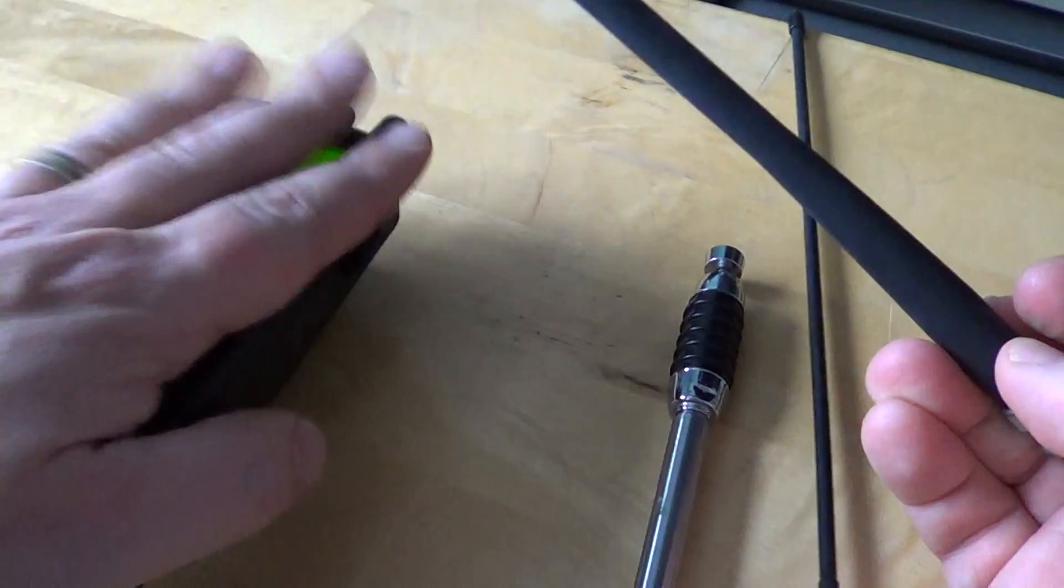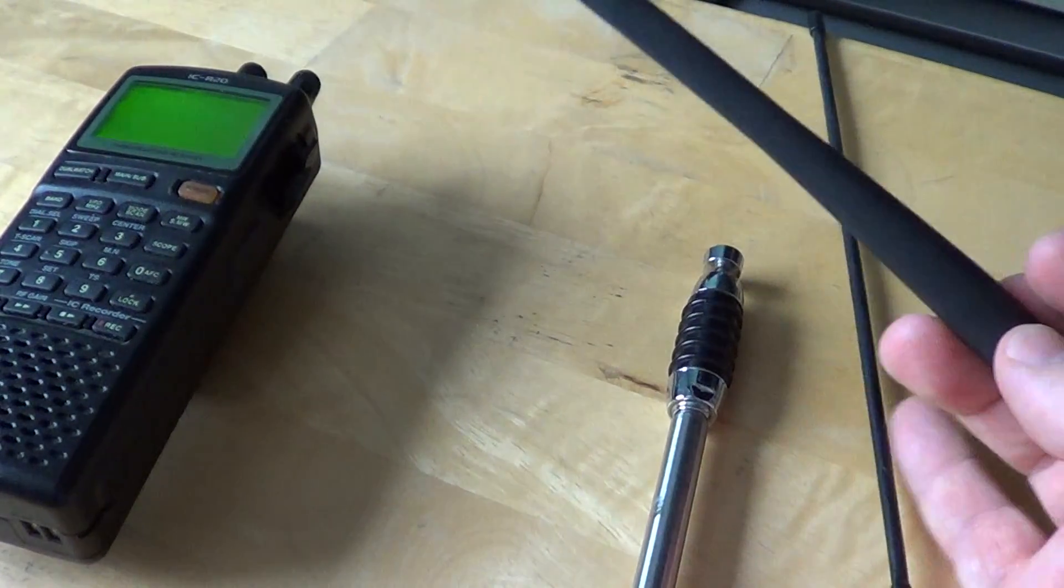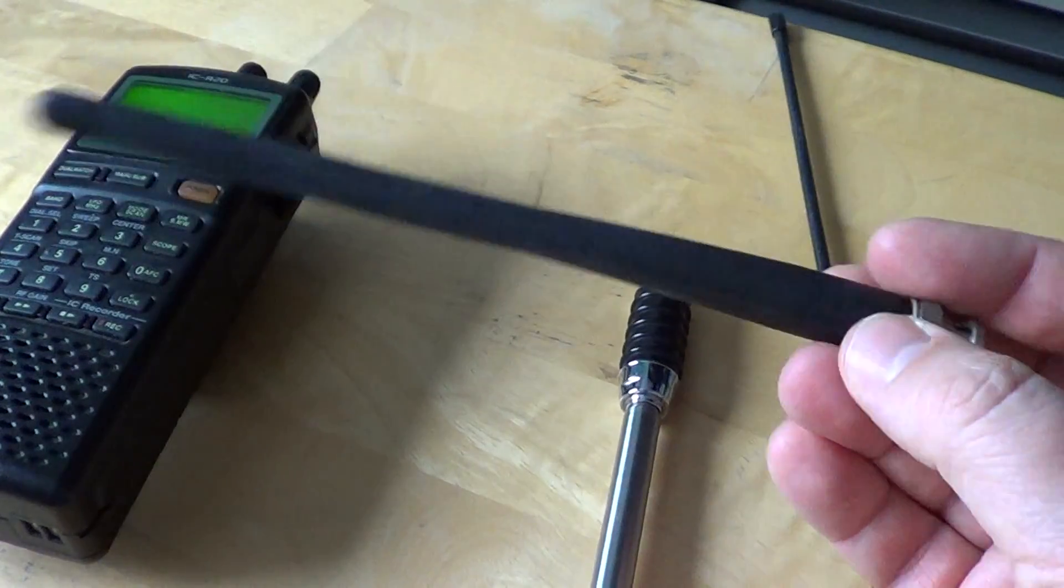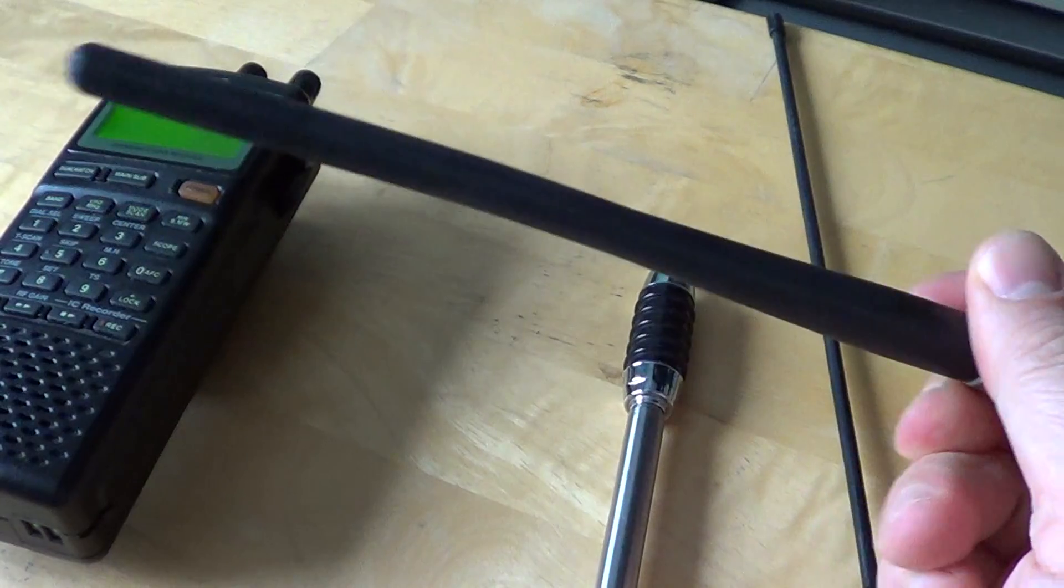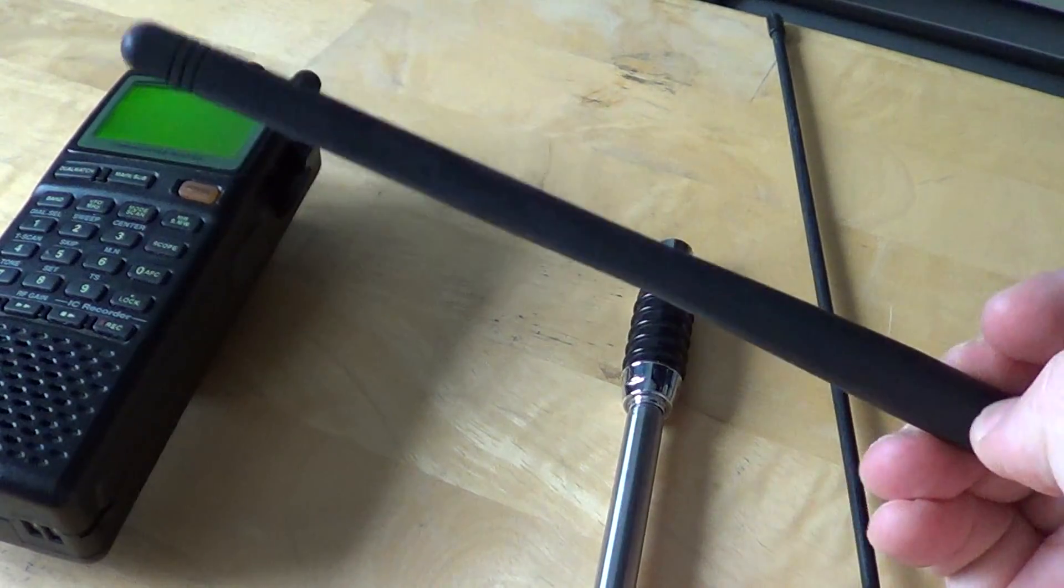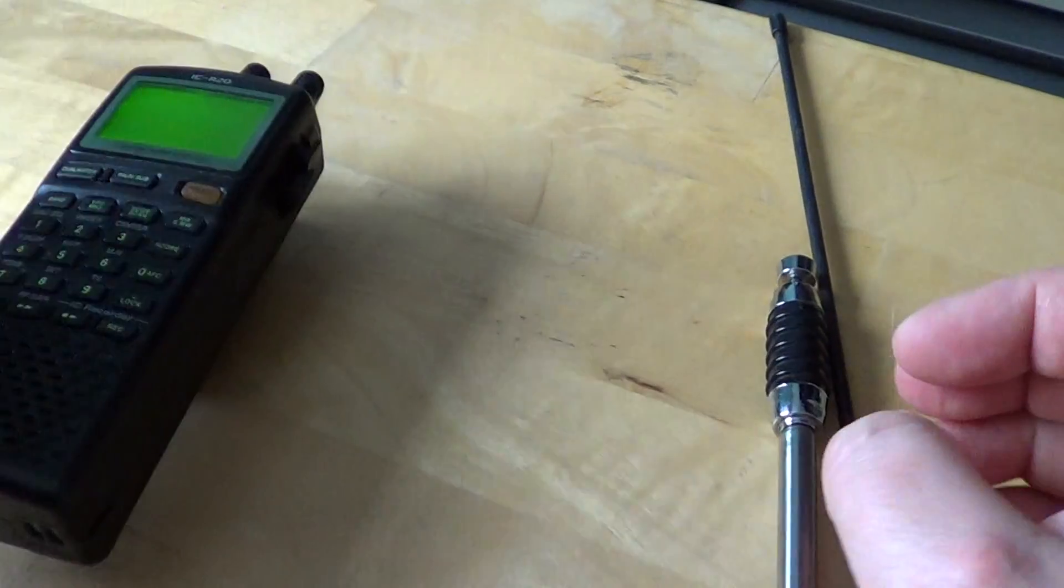I'll show you a few things that I have and that I use. First of all, this is the original rubber ducky that comes with most scanners. This one does not come with a rubber ducky, it comes with a flexible metallic telescopic antenna.